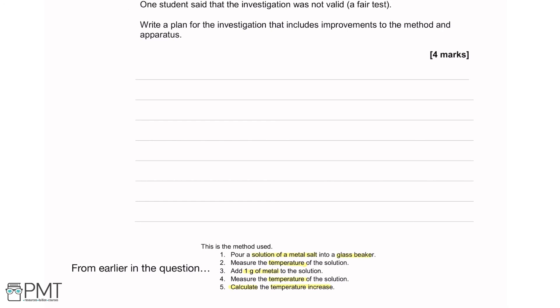One student said the investigation was not a fair test. We need to write a plan including improvements to the method and apparatus. Looking at the original method: 'pour a solution' is vague — how much? Also, a glass beaker isn't very insulated. 'Measure the temperature' is fine. 'Add one gram of metal' gives an amount, which is good. But 'measure the temperature' after adding — after how long, and how do we ensure all the solution has reacted? 'Calculate the temperature increase' is fine, but what about repeating and calculating a mean?